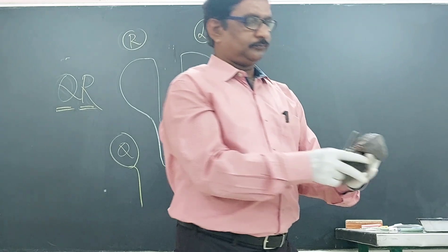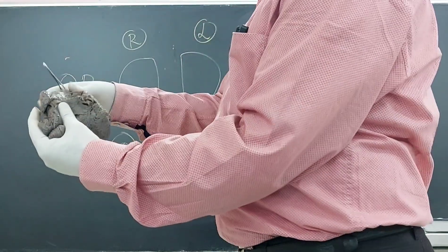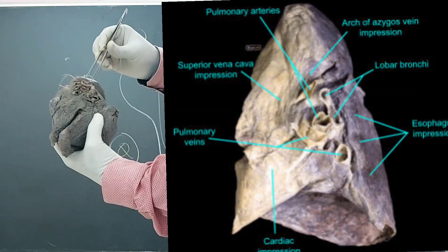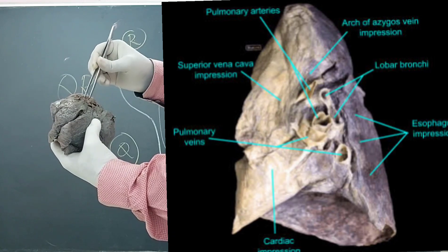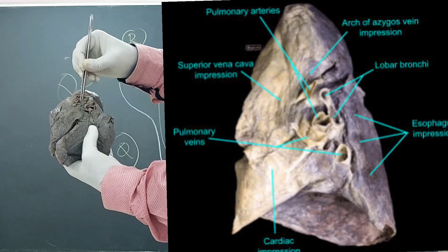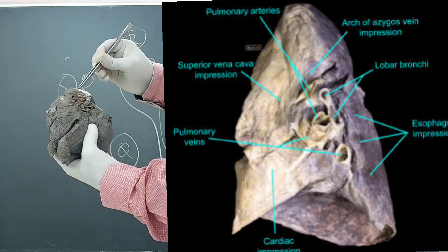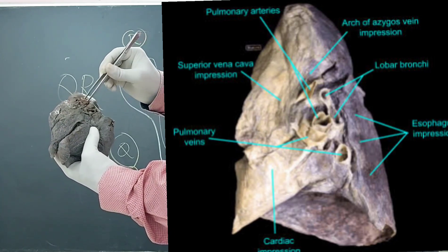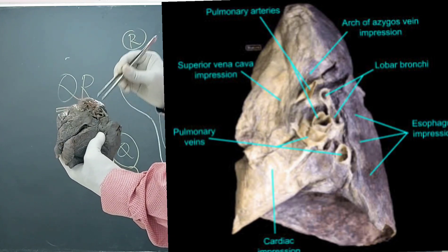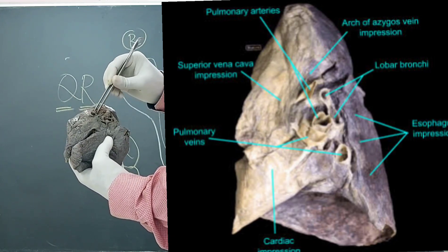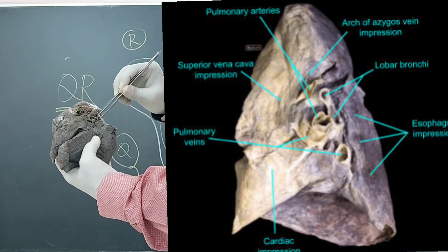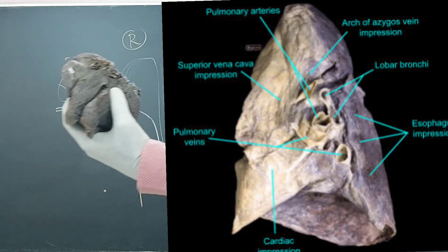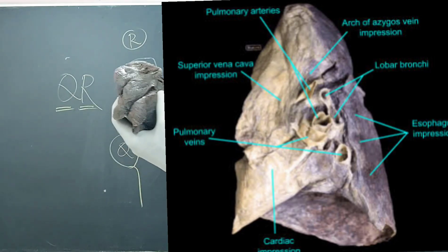On the right lung, the structures are also visible. One bronchus is above the pulmonary artery — that is the eparterial bronchus. Below the pulmonary artery is another bronchus — that is the hyparterial bronchus. Then there is the superior pulmonary vein and the inferior pulmonary vein. So on the right hilum there is one extra structure — the eparterial bronchus — because the upper lobe bronchus divides before it enters the right lung.